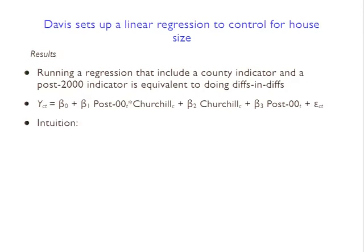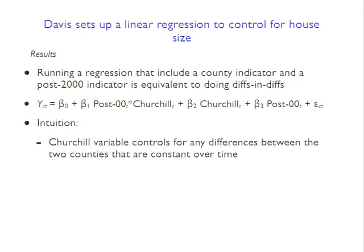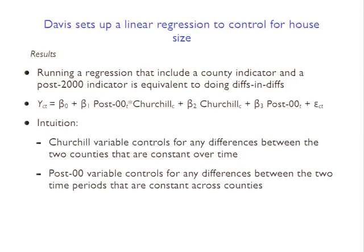In particular, he's going to add in things like housing - the lot size and square footage of the house, the number of bedrooms, and so forth. The intuition is that this virtual county variable is going to control for any differences between the two counties that are constant over time, and the post-2000 variable controls for any differences between the two time periods that are constant across the counties.